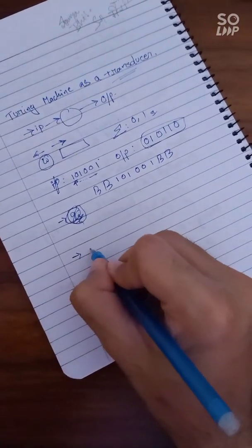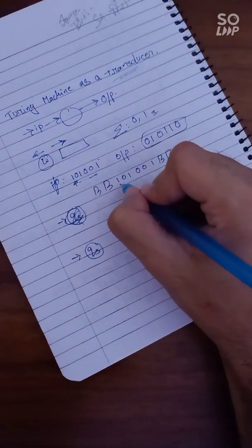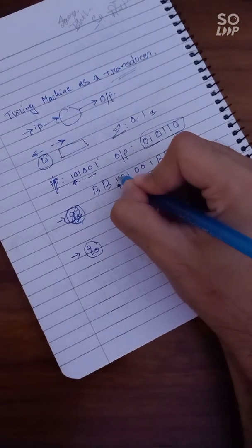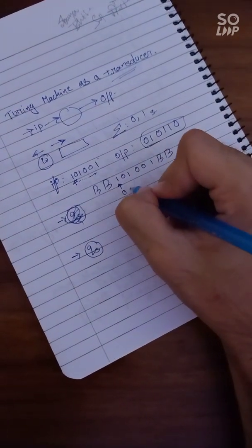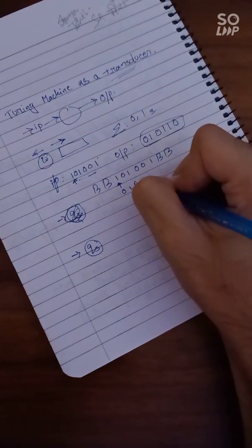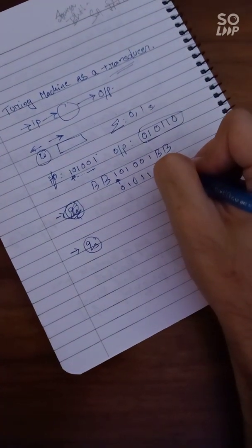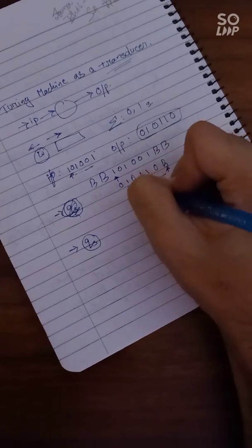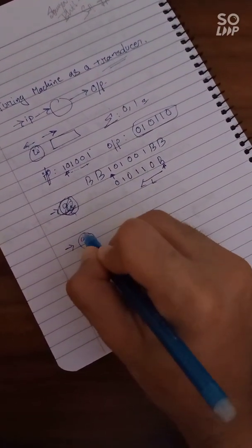So here is the start state. So what would happen here? So the pointer is here, so it would change it to 0, it would change it to 1, change it to 0, change it to 1, change it to 1, then 0.